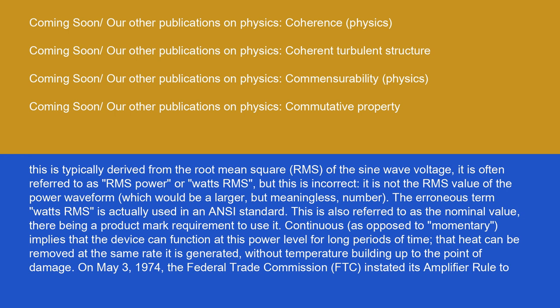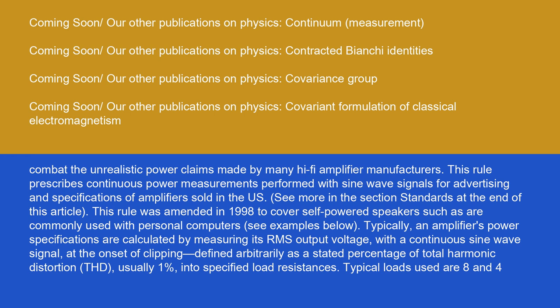On May 3, 1974, the Federal Trade Commission (FTC) instated its amplifier rule to combat the unrealistic power claims made by many hi-fi amplifier manufacturers. This rule prescribes continuous power measurements performed with sine wave signals for advertising and specifications of amplifiers sold in the U.S. This rule was amended in 1998 to cover self-powered speakers such as are commonly used with personal computers.